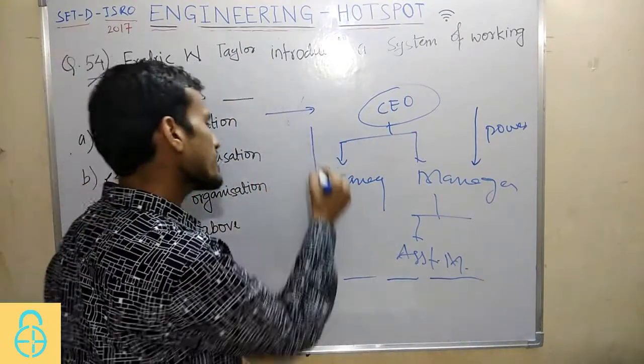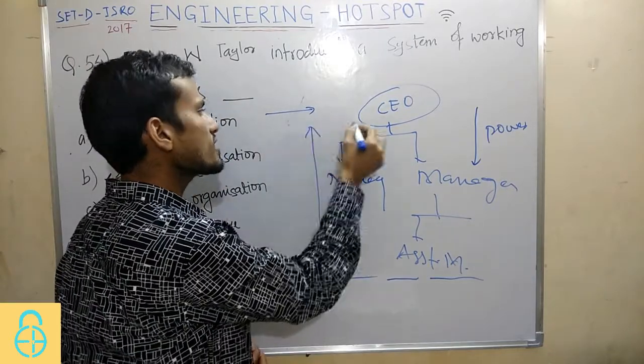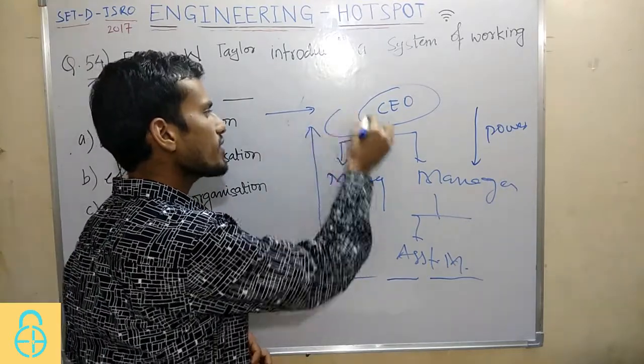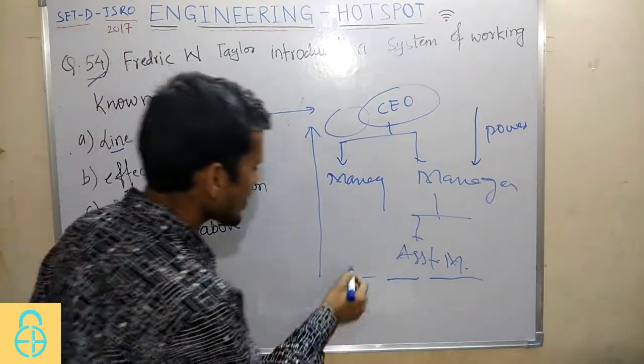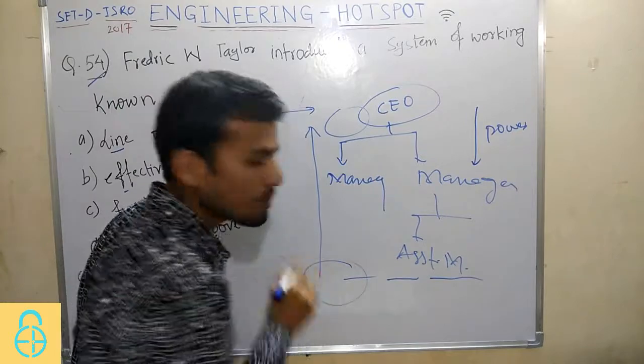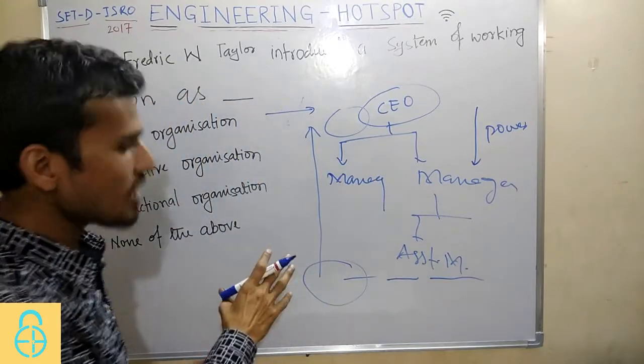In Line Organization, the responsibility increases in the opposite direction to power. The CEO has the least responsibility while the workers at the bottom have the maximum responsibility. This is the nature of Line Organization.